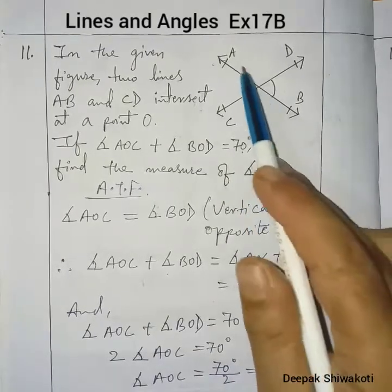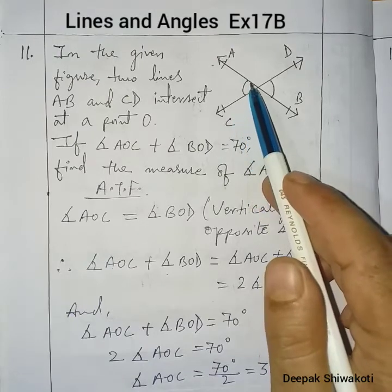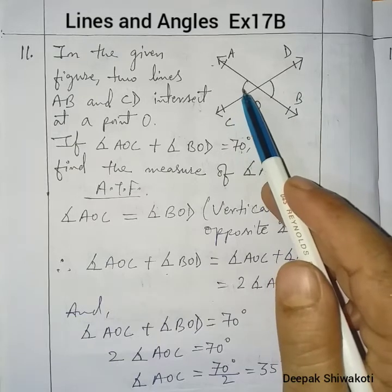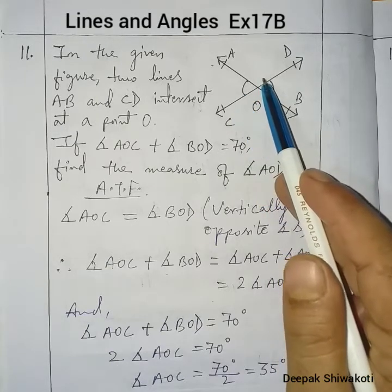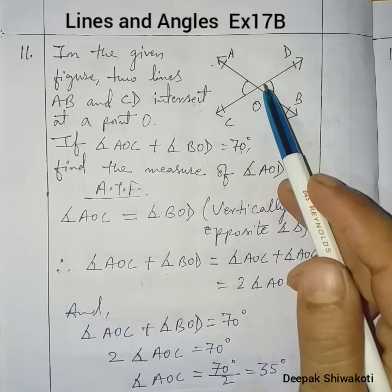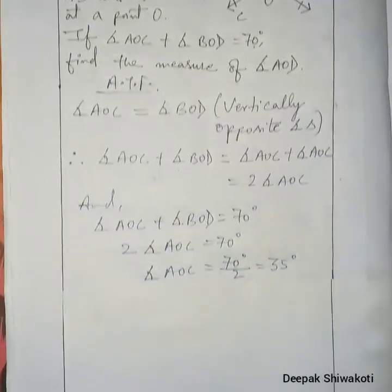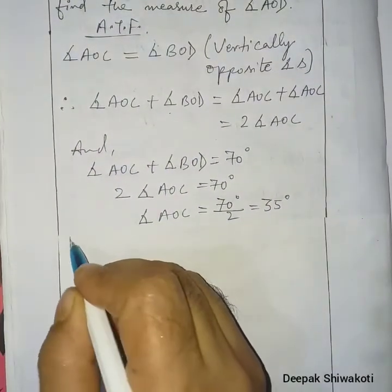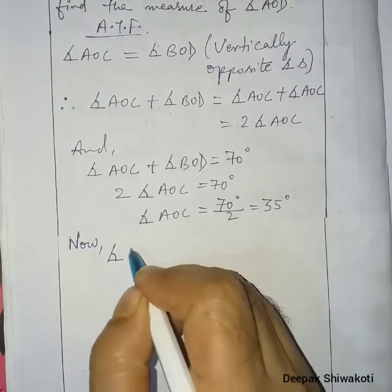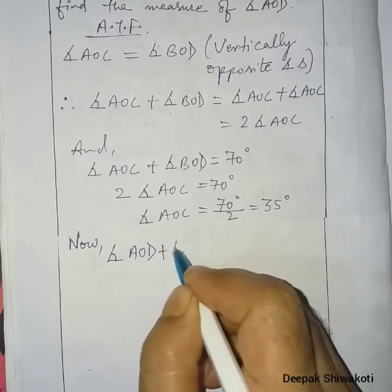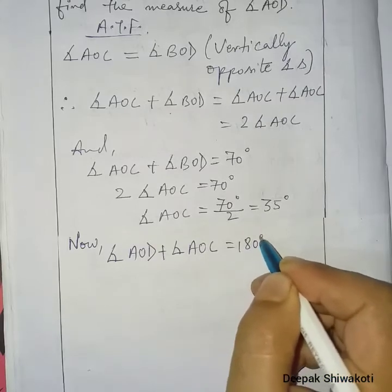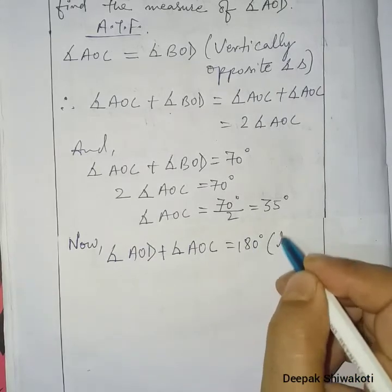Angle AOC we have found. Now we have to find angle AOD. You can see in this figure these two angles are a linear pair — that is, these two angles are at a point on a line. So angle AOD plus angle AOC is equal to 180 degrees, because these two angles are a linear pair.